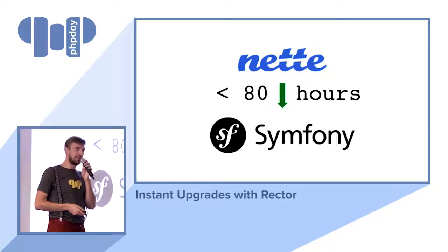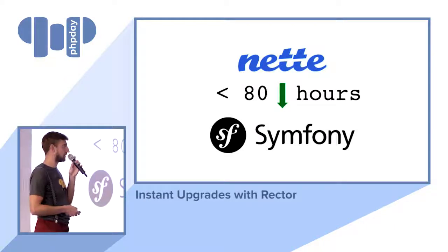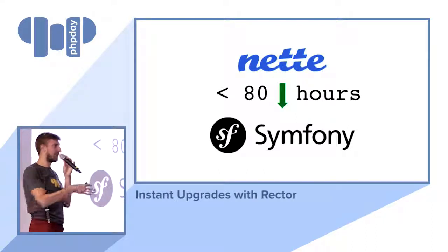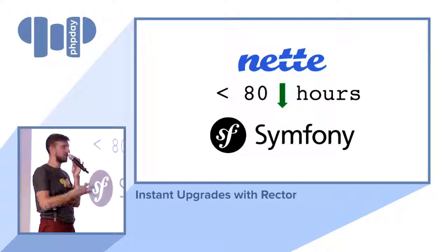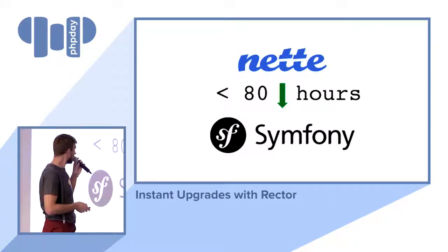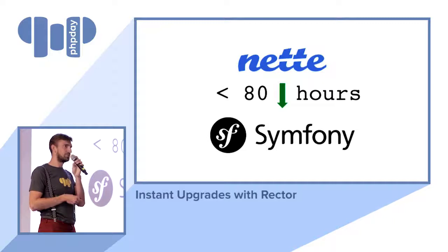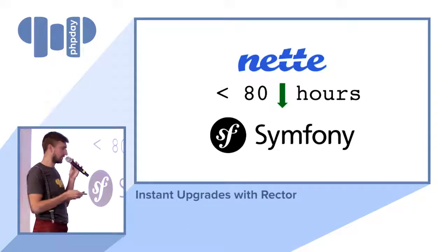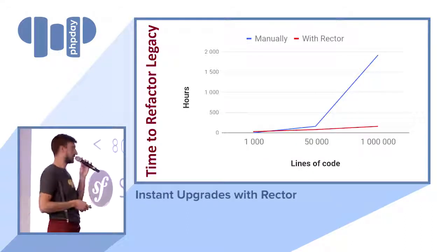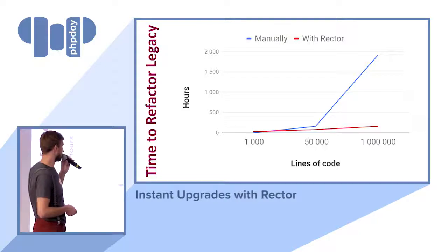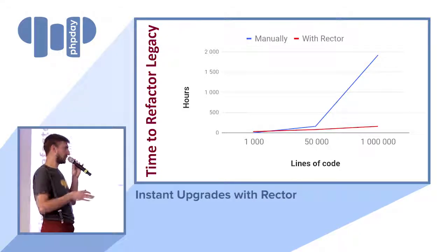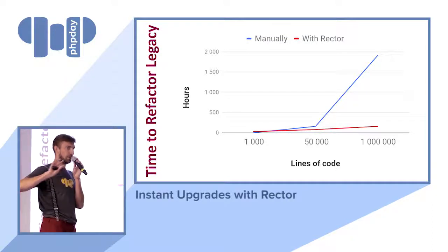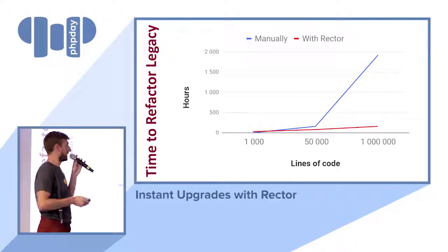It took us only 80 hours — but it took that long because we had to create the rules from scratch: figure out how Nette works, how Symfony works, and build those rules. There's also a migration from Neon to YAML and from Latte to Twig. If you use pre-compiled rule sets, it might take you only 10 or 15 hours. That's the main advantage: if you refactor by pattern using pre-compiled rules instead of file by file, it scales.